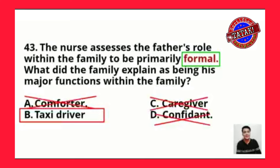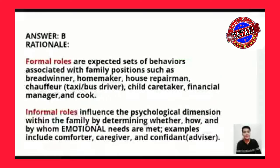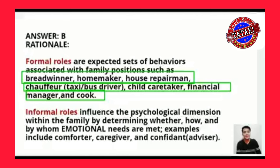Examples of formal roles of the father include breadwinner, homemaker, house repairman, sofa, taxi or bus driver, child caretaker, financial manager, and cook. Informal roles influence the psychological dimension within the family by determining whether, how, and by whom emotional needs are met. Examples of informal roles are comforter, caregiver, and confidant or advisor. An easy way to remember informal roles: letter C times three — comforter, caregiver, and confidant. The best example of a formal role of the father is being a taxi or bus driver. Letter B is the correct answer.